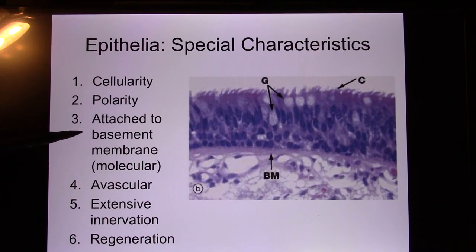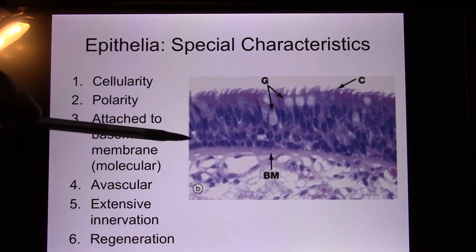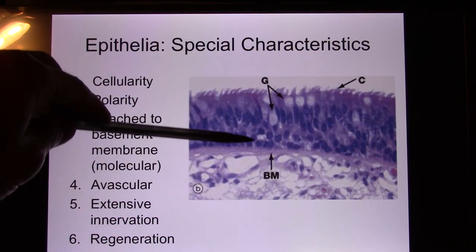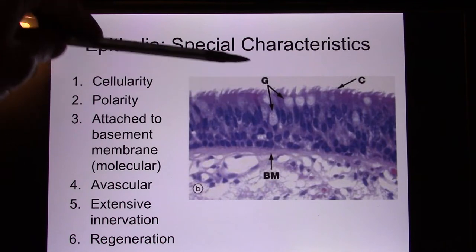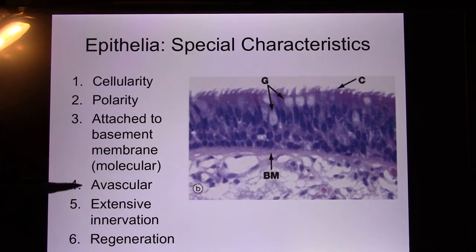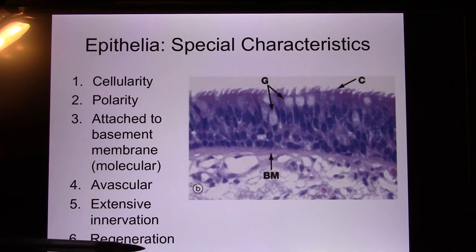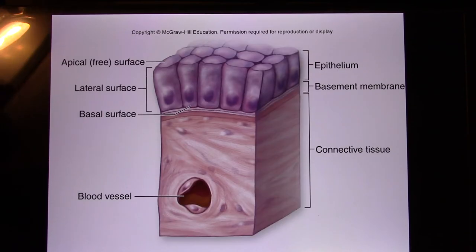Epithelial cells attach to the basement membrane — that's where they start to grow. New skin cells begin at the basement membrane and grow upward, becoming older and older. Another characteristic: avascular — no blood vessels, which is why you can peel your skin off. Extensive innervation means a lot of nerves, since your skin is a big sensory organ. And finally, regeneration — if you damage your skin, it regenerates very quickly.